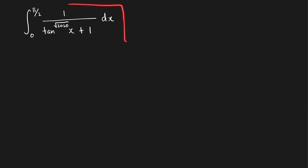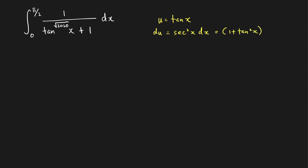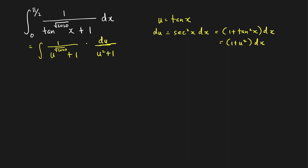Last problem: let's evaluate this integral. We make the substitution u = tan(x), so du = sec²(x) dx. Since sec²(x) = 1 + tan²(x) = 1 + u², we can write dx = du/(1 + u²). Therefore, the integral becomes ∫ 1/(u^√2020 + 1) · du/(u² + 1). The limits transform: tan(0) = 0 and tan(π/2) → ∞, giving an integral from 0 to ∞.